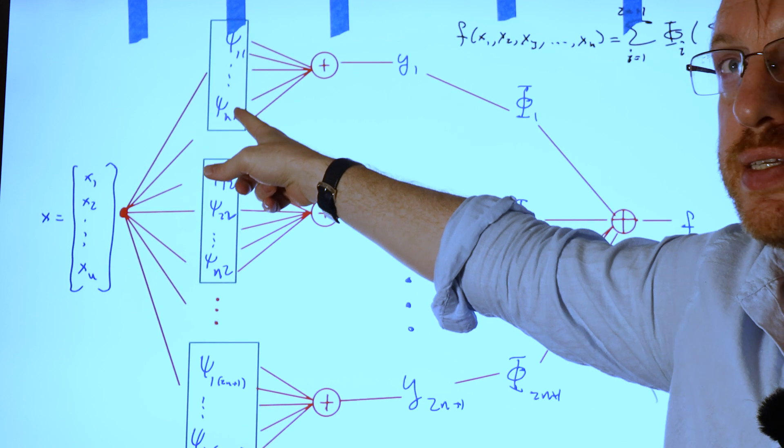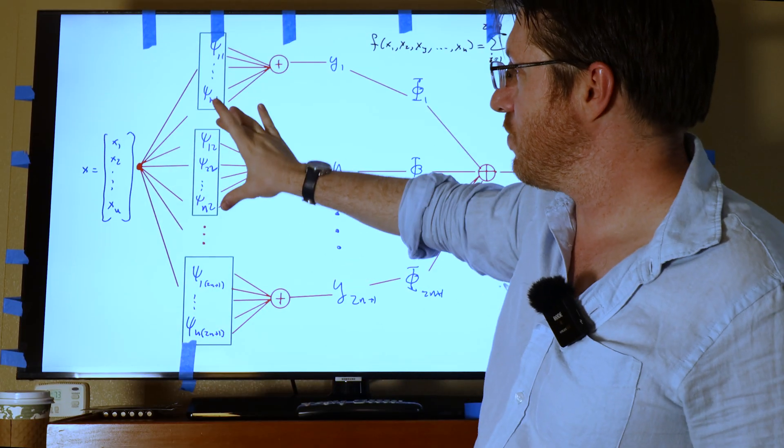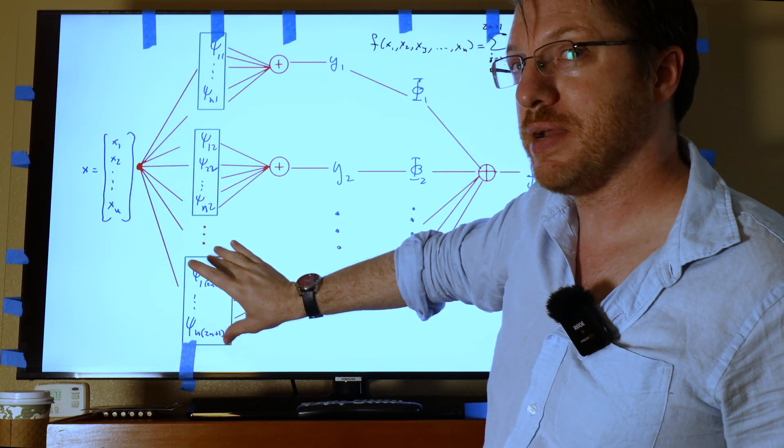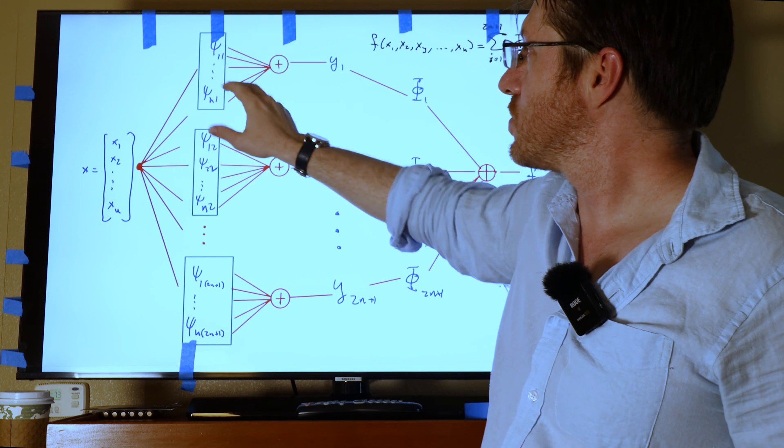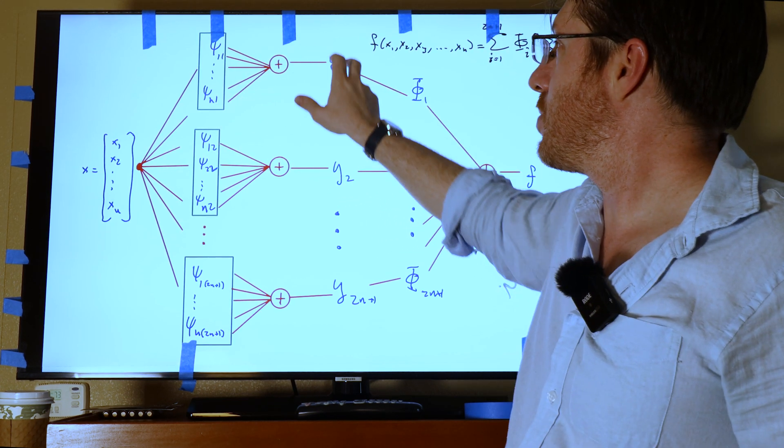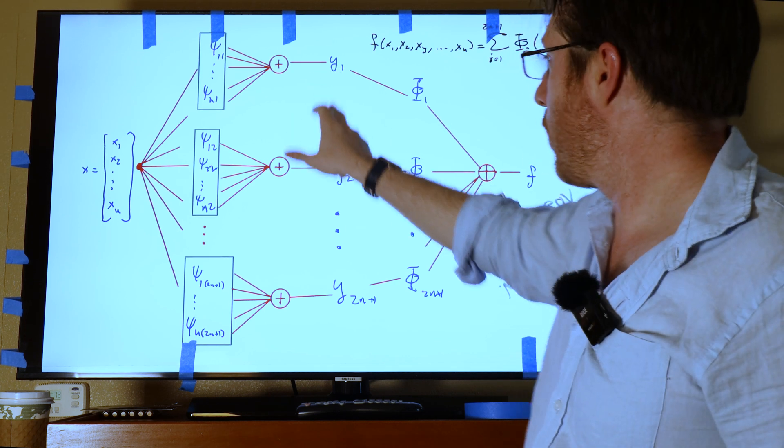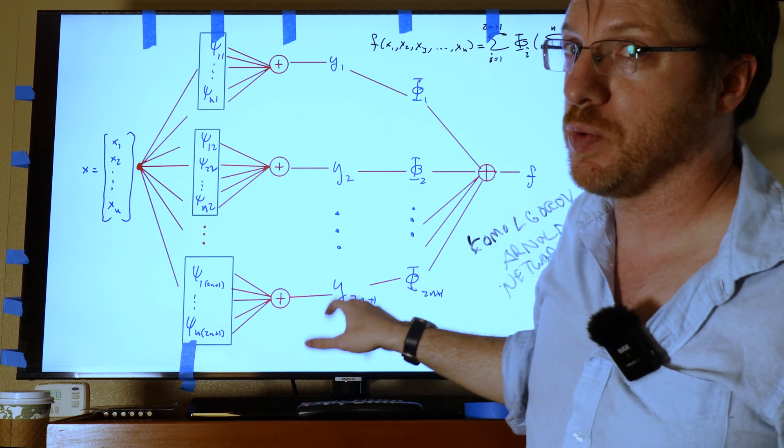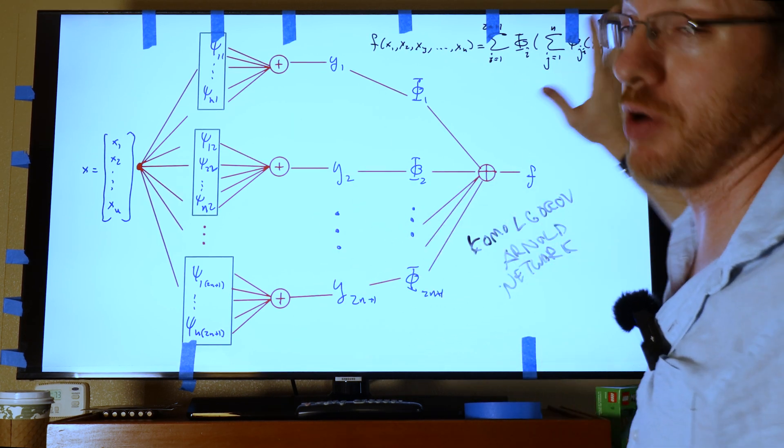So each one of these, this psi 1,1 up to psi n,1, they all get one of x1 through xn. So x1 goes into here, xn goes into this last one. And you do this again for different collections of psi each time. And then you collect all of those guys and we're going to add them together. And once we add them together, we put them in and we think of them as a new variable, say y1 through y_{2n+1} in this case, in the strict Kolmogorov-Arnold representation.